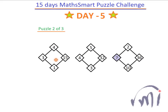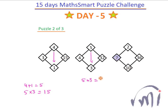Now let's see the second question — this is also a similar problem but with different logic. The logic here is: if I add these two numbers, 4 plus 1 gives me 5, and when this 5 gets multiplied by 3, I get 15. Similarly, 5 plus 3 is equal to 8, and when this 8 gets multiplied by this 4, I get 32.